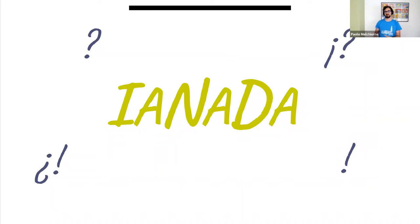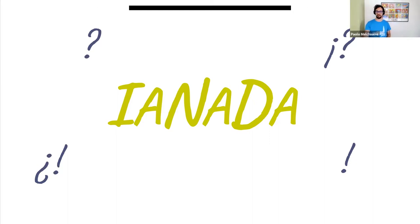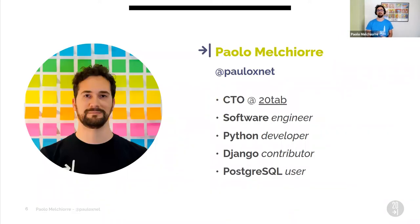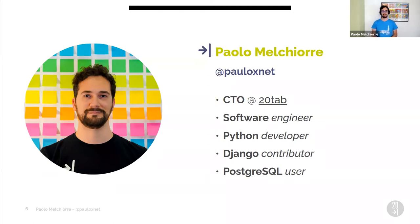Before moving on, it's important to make this clear: I'm not a database administrator. So who am I? I'm Paolo Vecchiorre and I'm the CTO of 20tab, a Pythonic software company for which I work remotely. I'm a software engineer and a long-time Python backend developer. After using Django for a few years I became a contributor to the project. I also use Postgres as a database for all my Django projects.